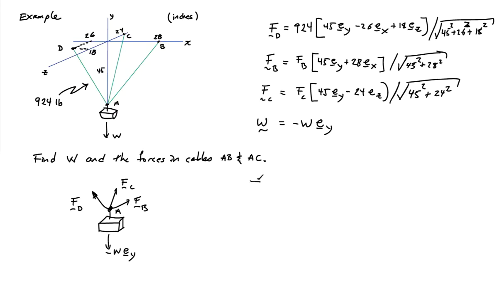If I sum the forces in the X direction, I'm going to find 924 times the X component of the unit vector pointing along cable D, so I'll call that EADX, plus FB times EABX. Those are the two vector components that give me something in the X direction, and this has to equal zero. Just to be clear, this term here is EAD, this set of terms here is EAB, and those are unit vectors pointing from point A to point C.